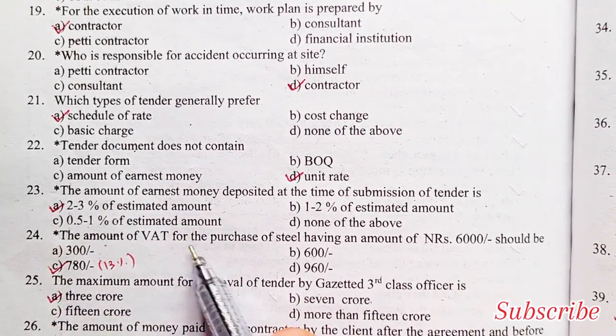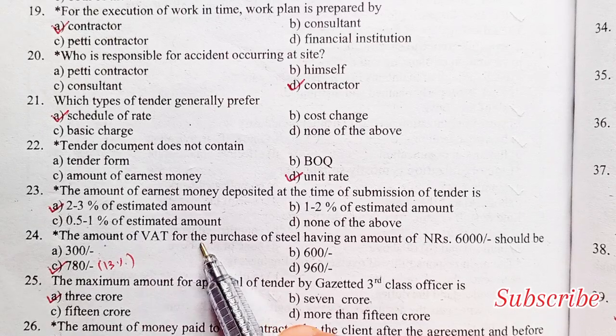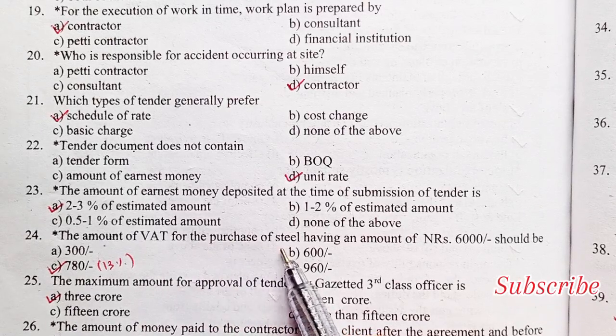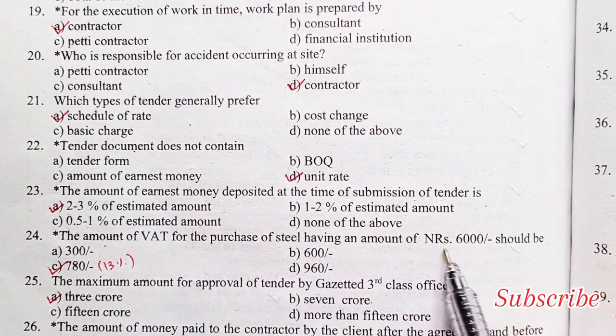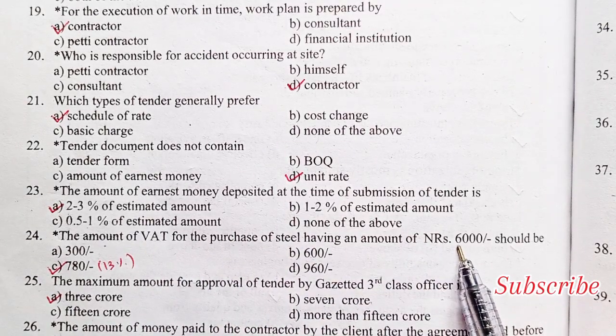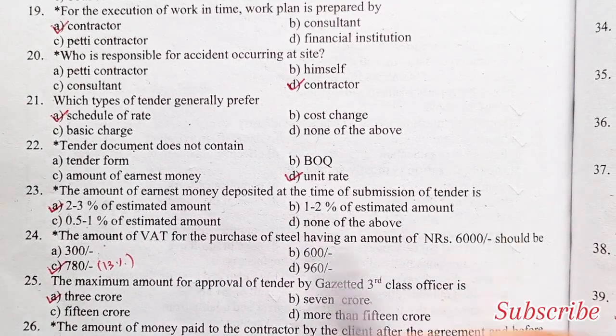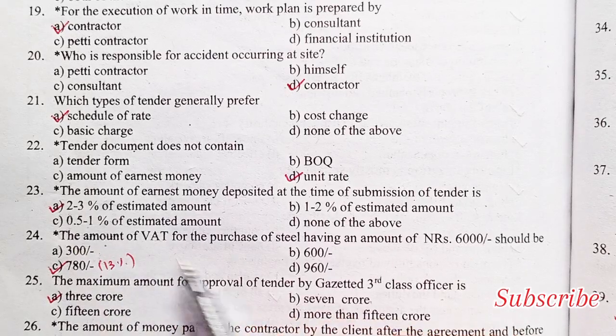The amount of VAT for the purchase of steel having an amount of NRS 6,000 — the VAT amount should be calculated accordingly.